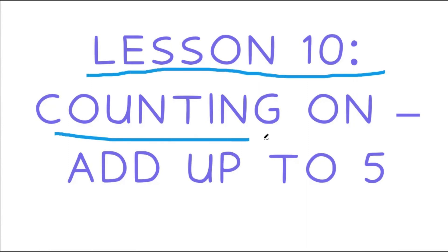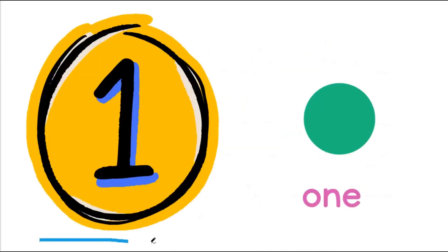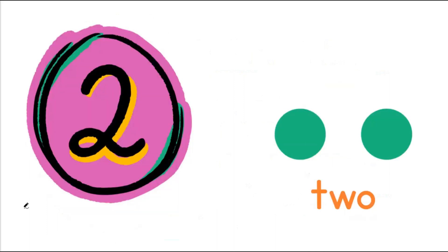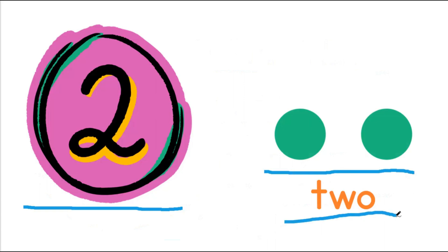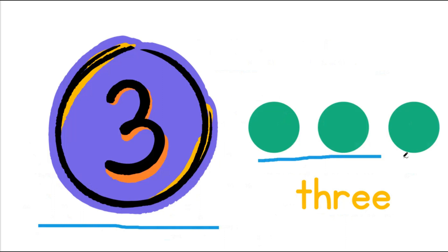Lesson 10: Counting on, add up to 5. This is the number 1. This is 1 dot. O-N-E spells 1. This is the number 2. There are 2 dots. T-W-O spells the number 2. This is the number 3. Here are 3 dots. T-H-R-E-E spells 3.